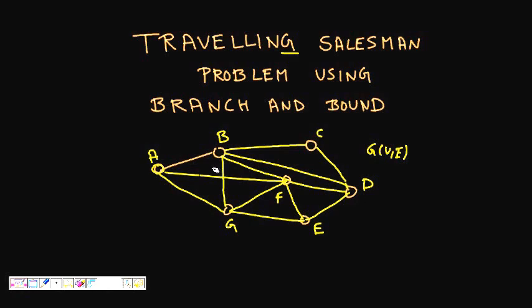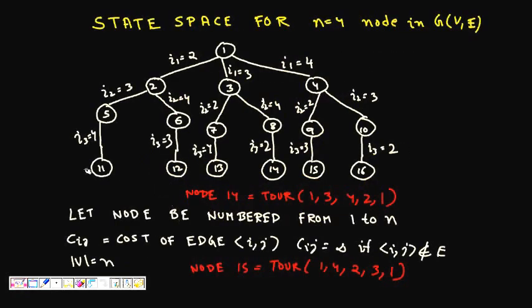Our aim is to find the minimum cost traveling salesman cycle. Now let's look at the state space diagram — what is the maximum number of possibilities we can have?